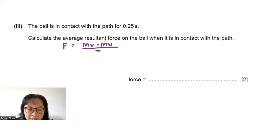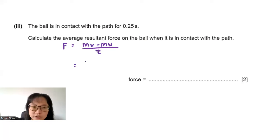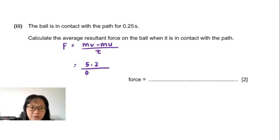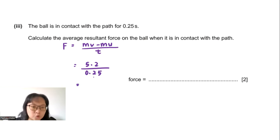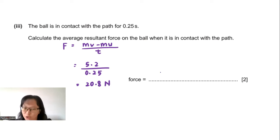The change in momentum we calculated is 5.2 kg·m/s, divided by the time of 0.25 seconds. The answer is 20.8 N. You can round it to 21 N — both are acceptable. 20.8 N is three significant figures.